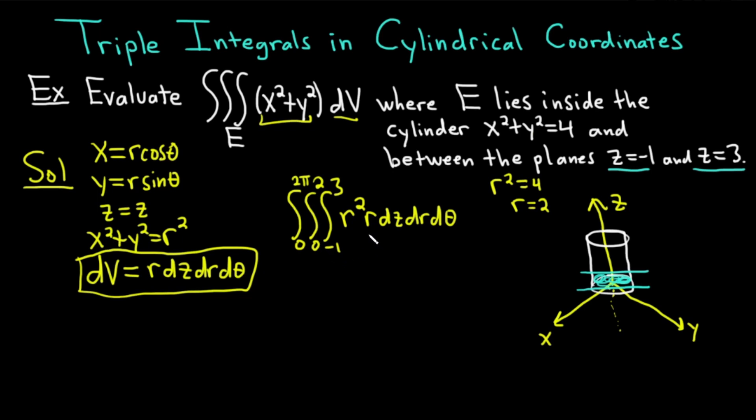Great. So now let's just go ahead and simplify this a little bit. r squared times r is r cubed, so we just have to rewrite everything very carefully. 0 to 2 pi, 0 to 2. It's just a lot of notation. And then negative 1 to 3. And r cubed. dz, dr, d theta.